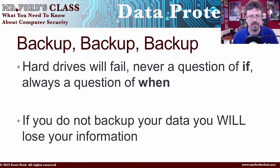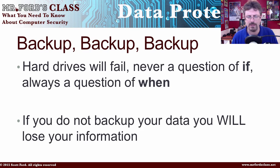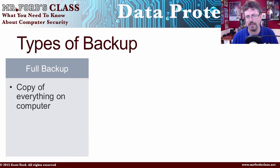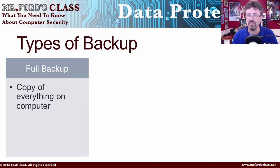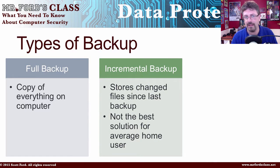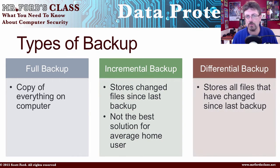There are three basic types of backup. The first is a full backup — we copy everything on the computer, the entire machine. It ensures you have all your data but is one of the longest backup types. An incremental backup stores only the changed files since the last backup; this is more of a corporate solution, not ideal for the average home user. The third type is a differential backup, which stores all files that have changed since your last backup. As a home user, you're either going to use a full backup or a differential backup.